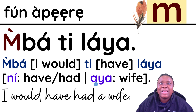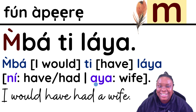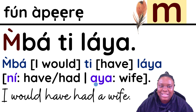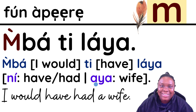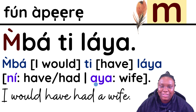I took this from a song — if you know it, it may bring back memories. Mba tilaiya — 'I would have had a wife.' Liar is a contraction of 'ni aya': ni is 'have/had,' aya is 'wife.' It's a funny folk song about someone who drank too much palm wine and spent all their money, so they couldn't afford to take care of a wife.